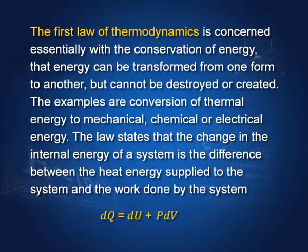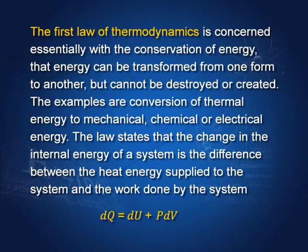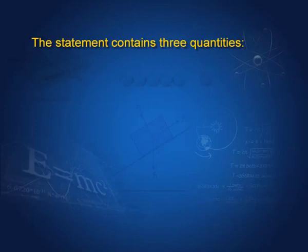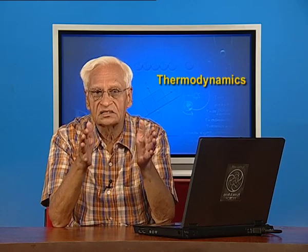Let us see the first law of thermodynamics, which is concerned with conservation of energy — that energy can be transformed into other forms, and energy cannot be destroyed or created. Examples are conversion of thermal energy to mechanical energy, chemical energy, or electrical energy. The law states that the change in the internal energy of a system is the difference between the heat energy supplied to the system and the work done by the system. This statement contains three quantities: internal energy, heat energy, and work done by a system.